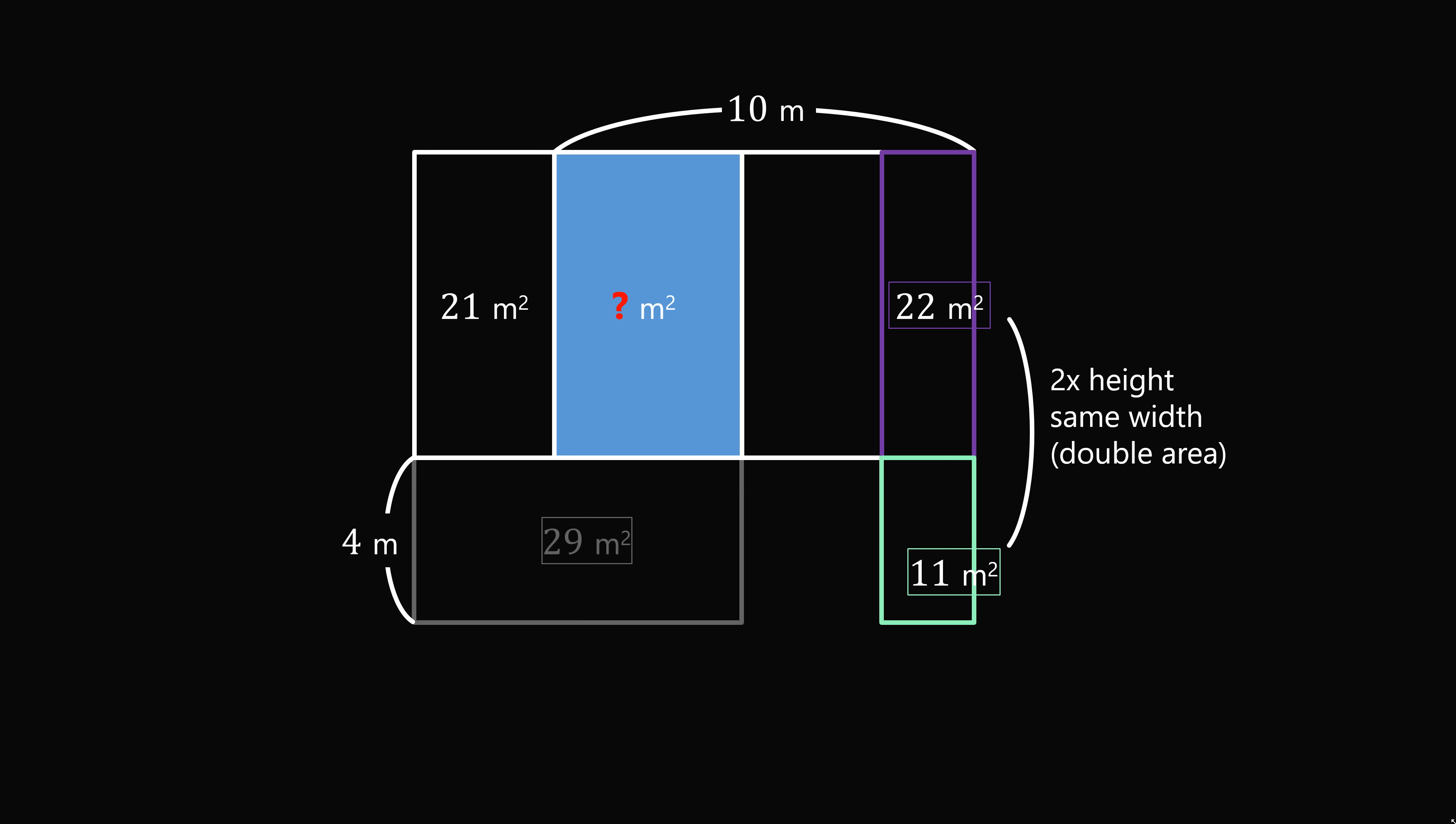So we can use this principle by reappearing this 29 meters squared rectangle. This shares the same width with the top two rectangles. So their combined area must be twice 29. So that is equal to 58 meters squared.